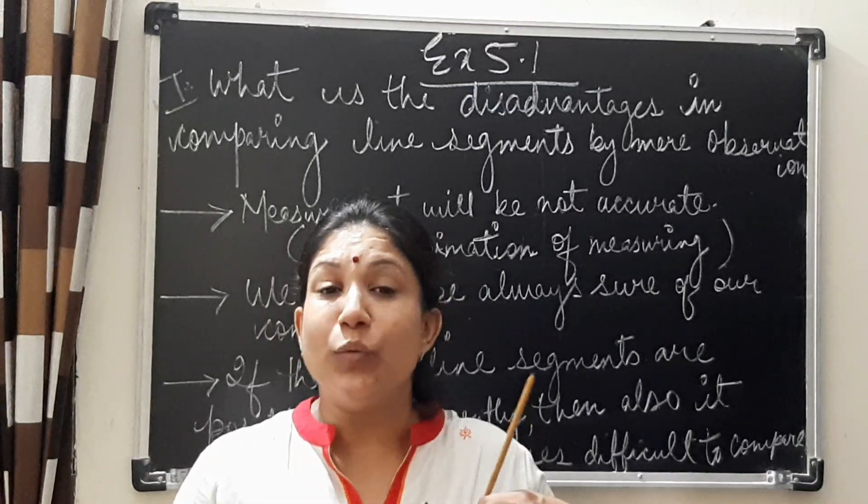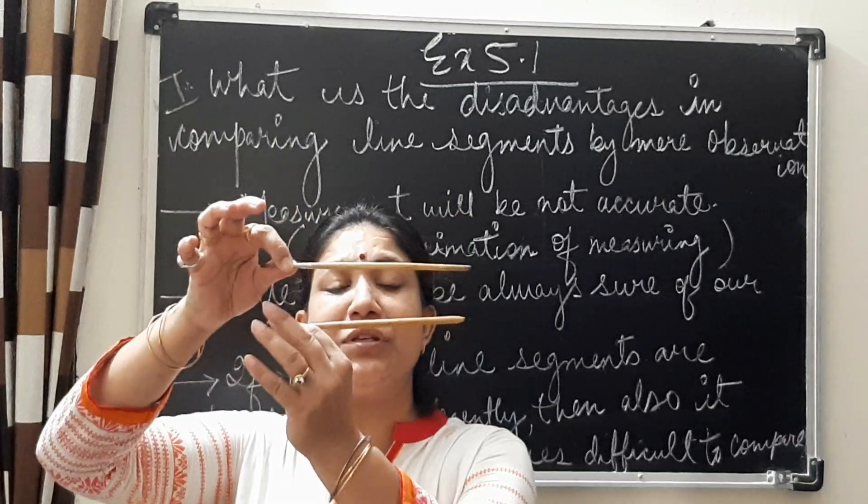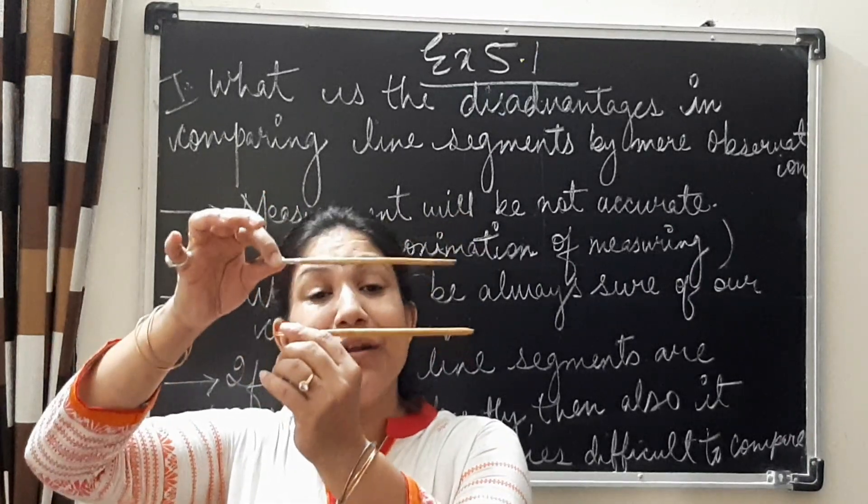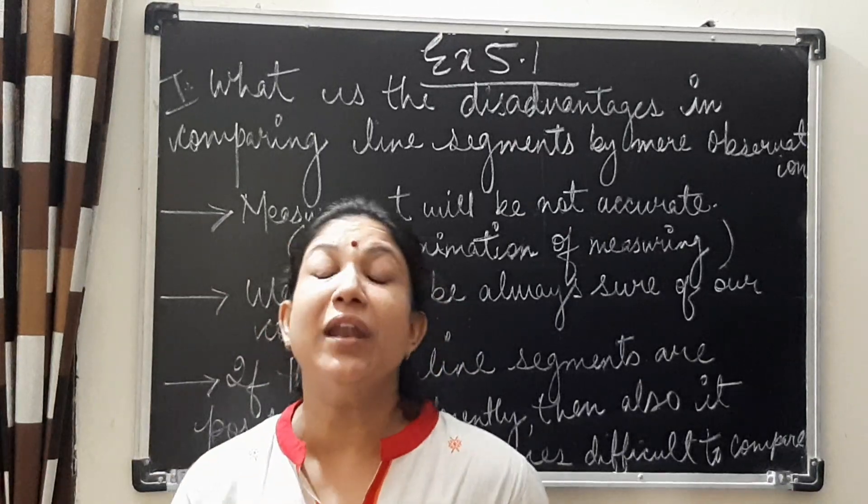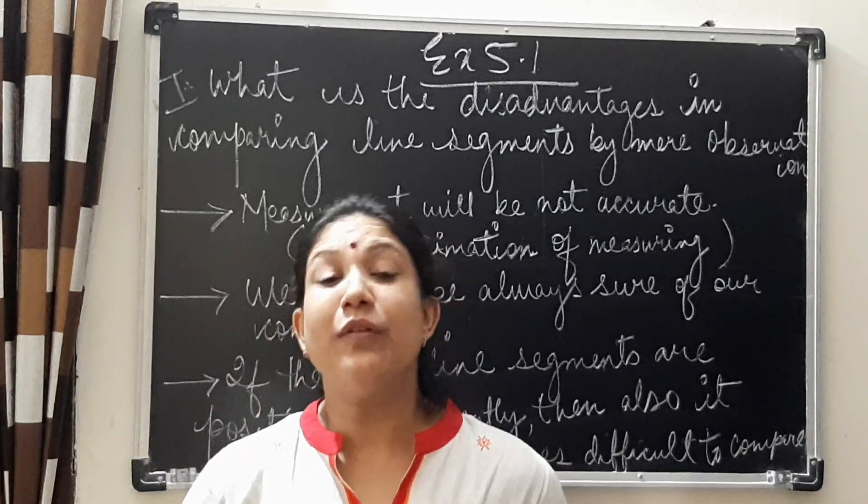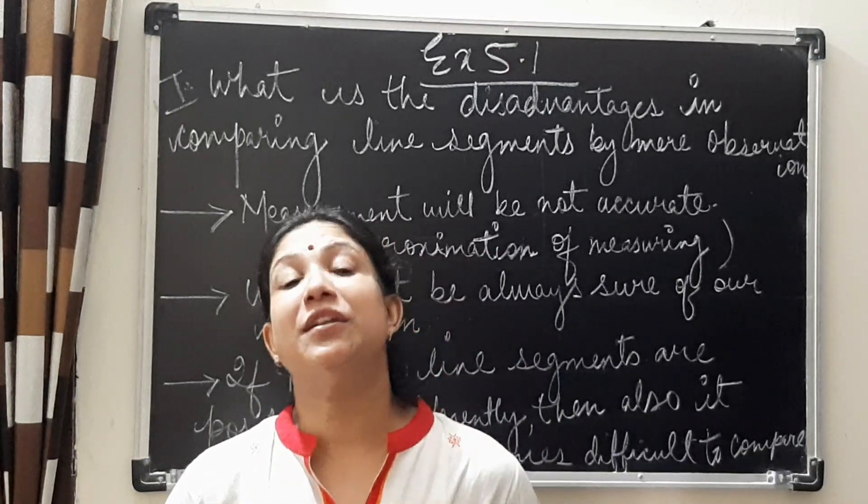Approximation means you will just think that this is maybe 10 cm, this is 12 cm, or both are of 11 or 12 cm. So you will never get accurate measurement. You will always get some approximation of measurement. That is the first disadvantage.